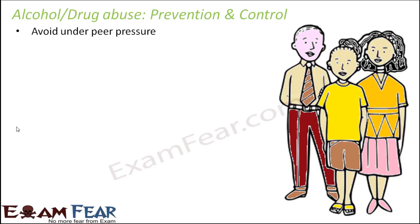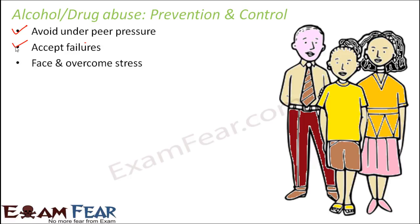Some ways for prevention and control: avoid peer pressure - even if your friends are forcing you, you should be wise enough to know it is not right. You should not indulge in any of these things and should advise your friends not to go for it either. Accept failures - there is no point running away from failures or taking drugs just to forget them. Failures are a truth of life, and knowing your failures may help you do better. Face and overcome stress - stress is a part of life, problems will come and you will resolve them.